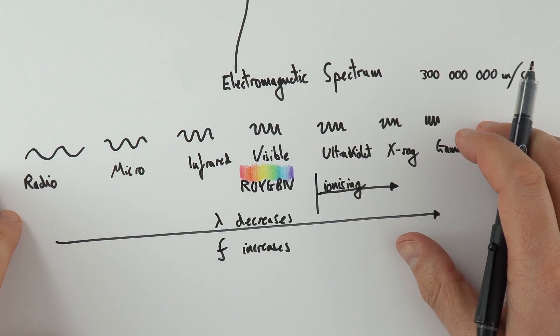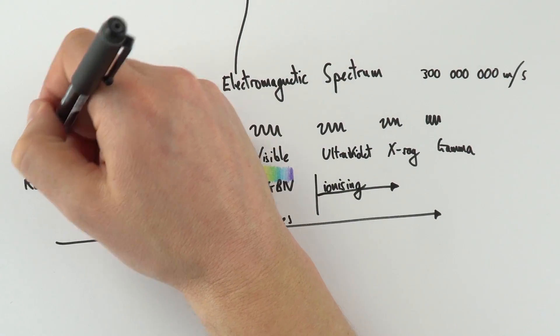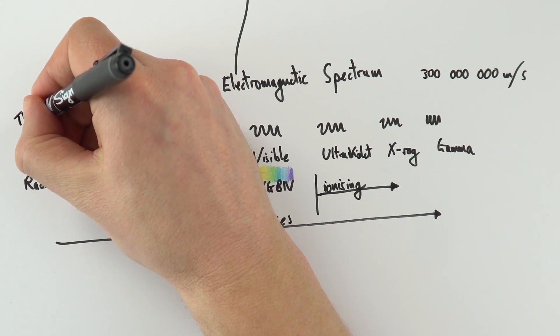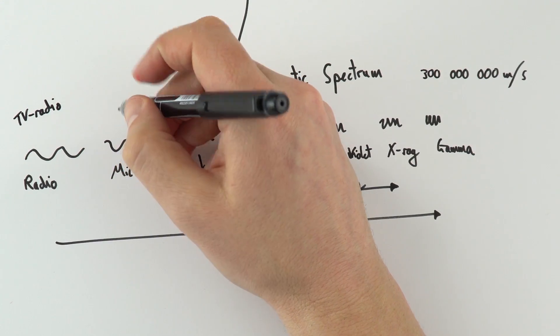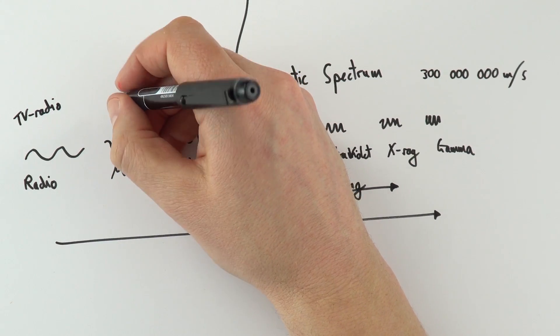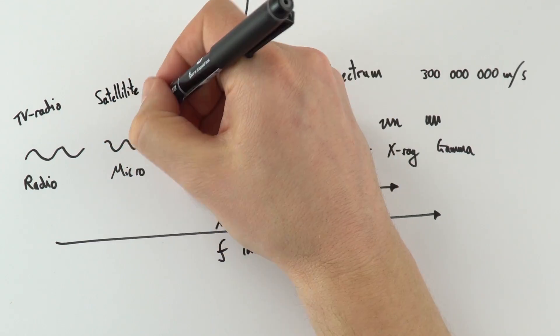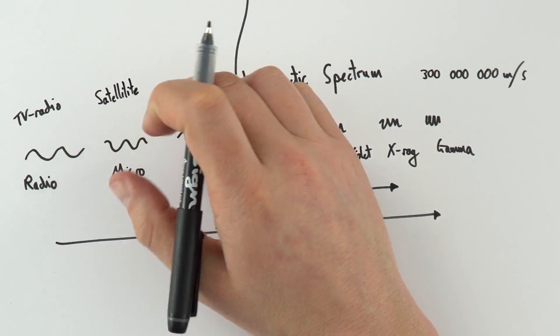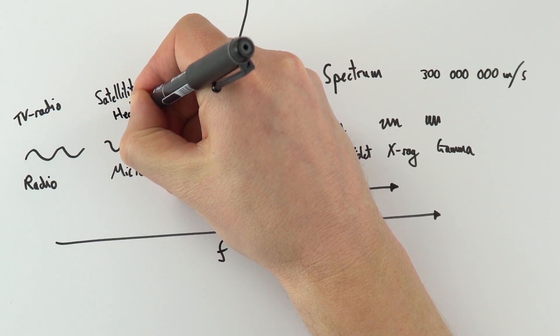These have loads of uses. If we think about radio, this is used for television and radio, so used for communication. We also use microwaves for communication, which might include things like your mobile phone. We have satellite communication, and we can also use this to heat up food because it causes certain molecules to vibrate at the same frequency.